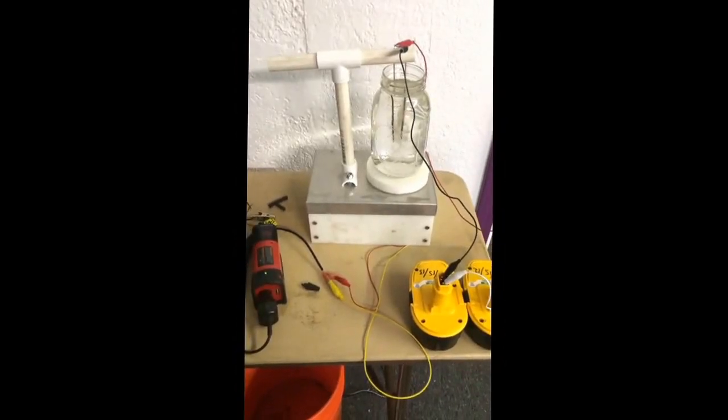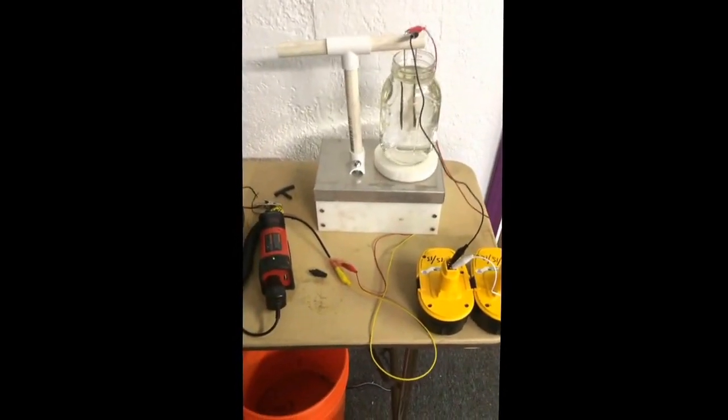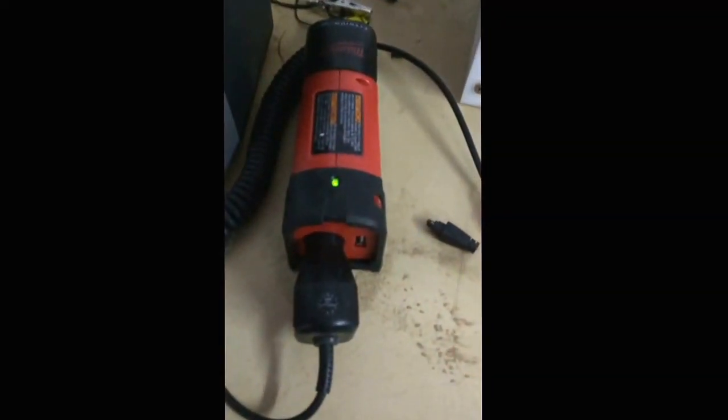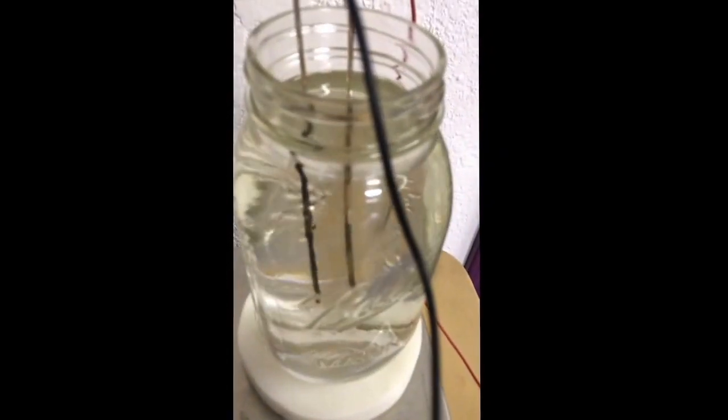All right, so here's my colloidal silver generator. We've got a 12 volt battery pack turning the turntable, which is turning the jar.